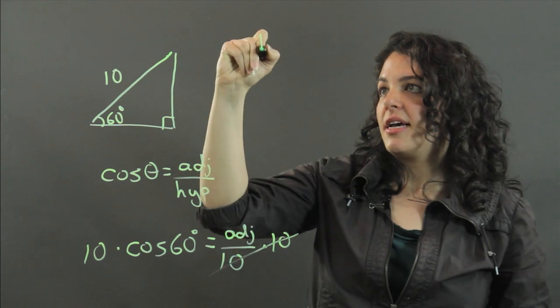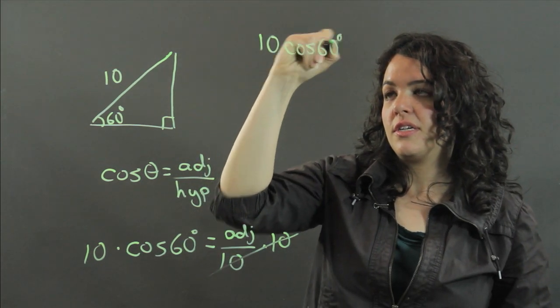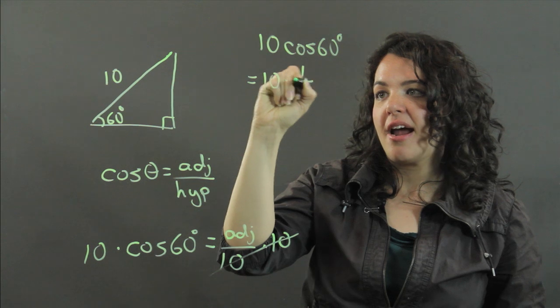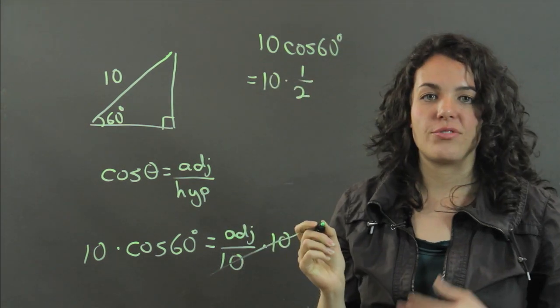And we get 10 times the cosine of 60 degrees, which is equal to 10 times one-half, because the cosine of 60 degrees is one-half.